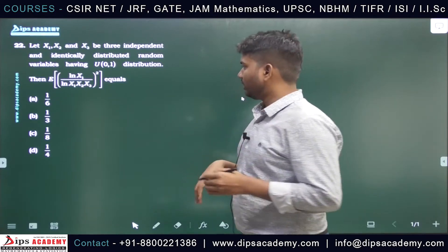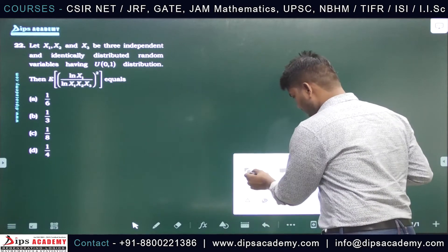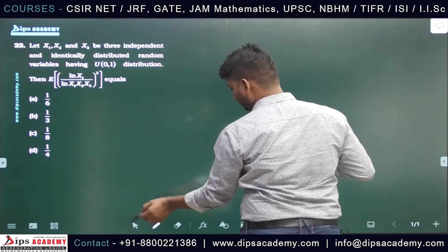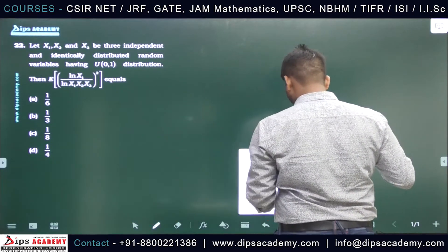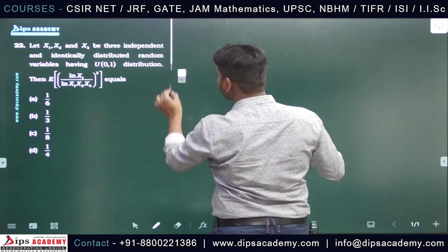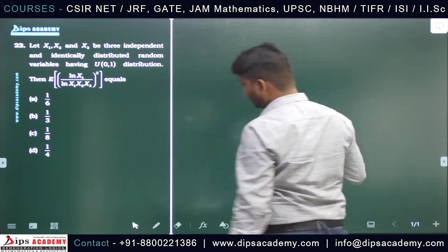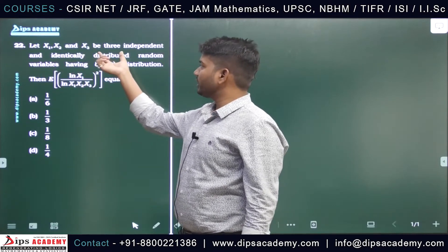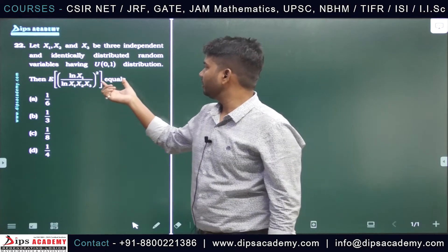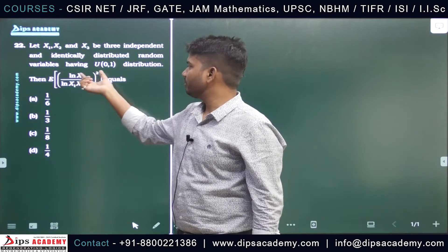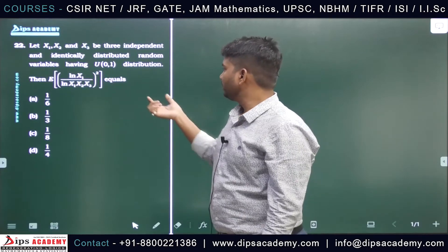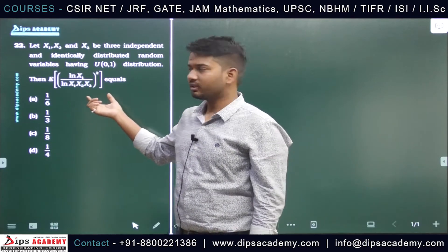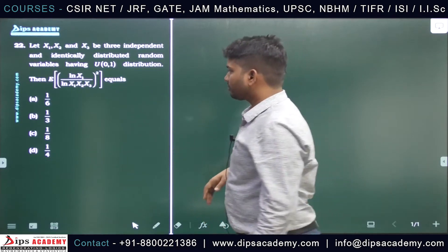This question comes from uniform distribution. We have X1, X2, and X3 as independent identically distributed random variables having Uniform(0,1) distribution. We need to find the expectation of ln(X1) divided by ln(X1·X2·X3), whole square.